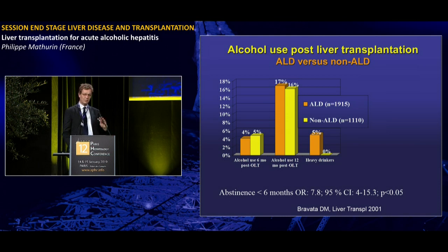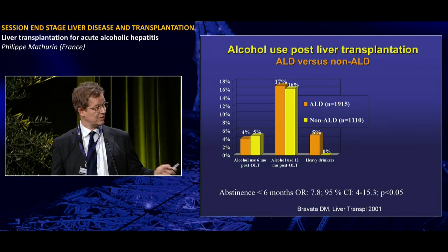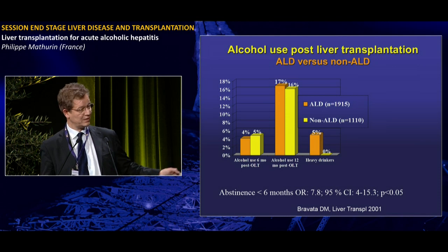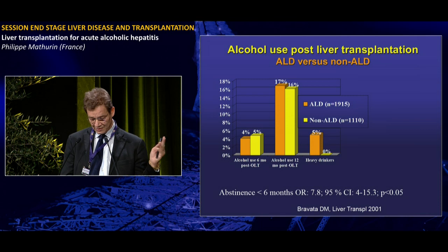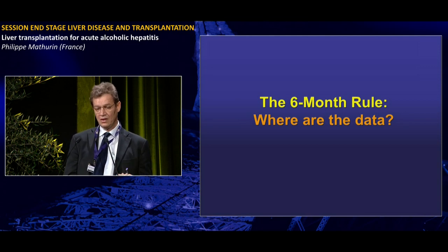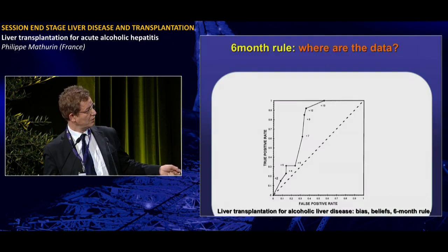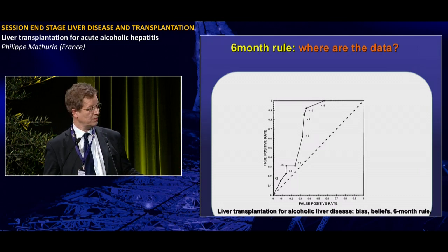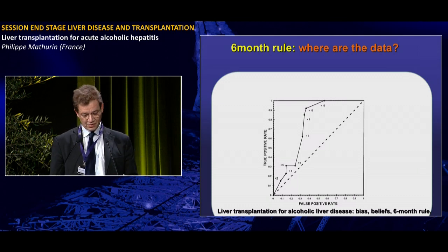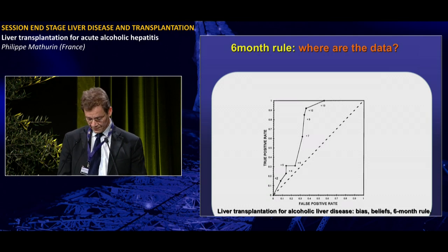In alcohol liver disease, there is a higher percentage of heavy drinking behavior after liver transplantation, which is associated with recurrence of alcohol liver disease and increased risk of long-term death. Up to now, centers have relied on the six-month abstinence rule, but statistically, when looked at as a ROC curve, the sober period before transplantation is completely irrelevant as a predictor — it is a good inclusion criterion but a poor exclusion criterion.